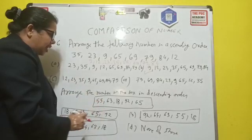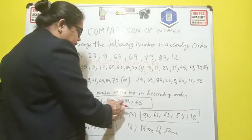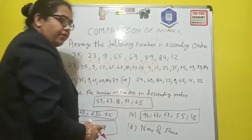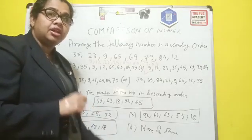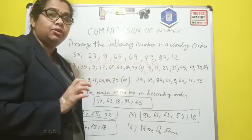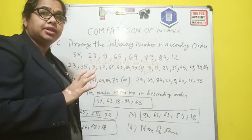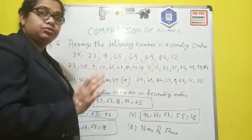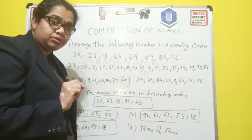So numbers are 55, 63, 18, 92, and 65. So for the descending order, what we have to do children? We have to go from the greater to the lower, or max to the minimum, or you can say the higher to the lower. Okay children. So very interesting question.